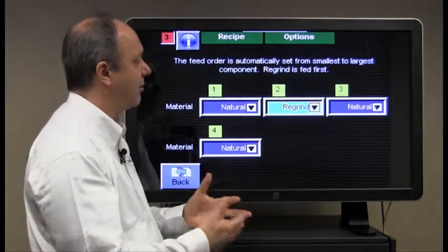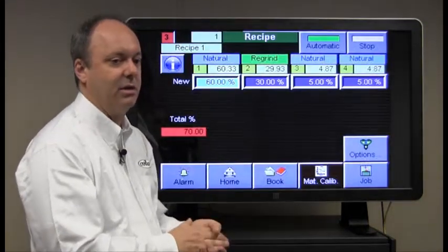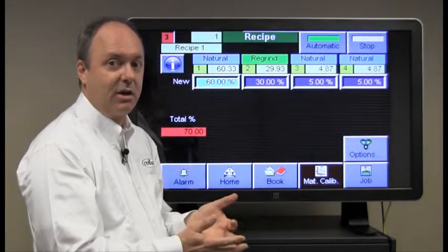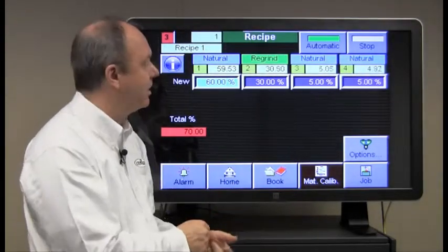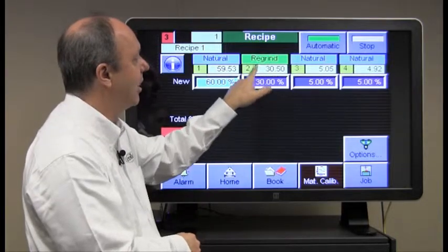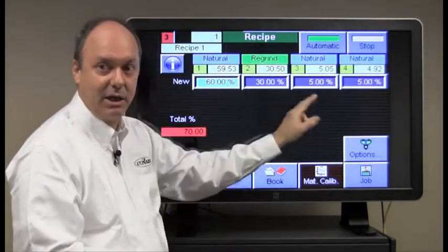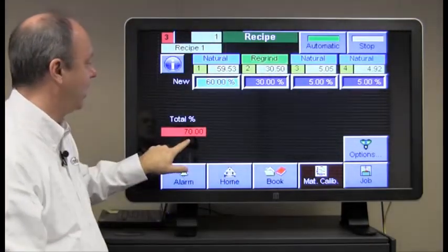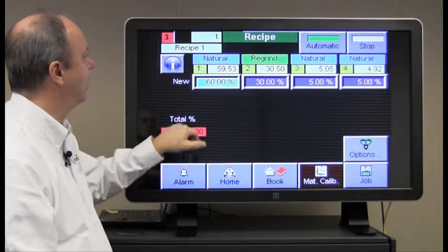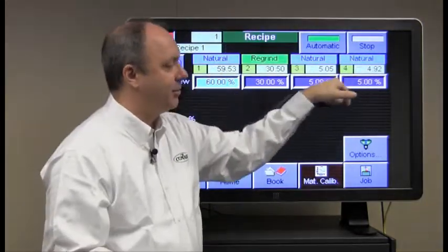At this point I've only modified what I want the blender to do. It's presently executing the recipe that I entered originally. It doesn't change this to regrind until I hit automatic and commit it. But right now I have a warning. The warning is telling me that the naturals do not add up to 100.